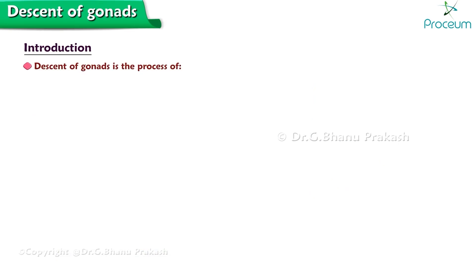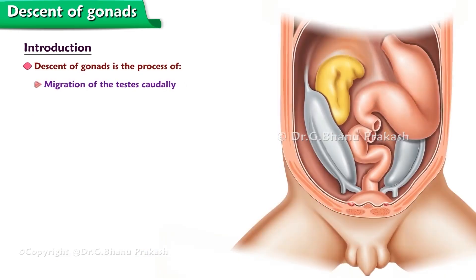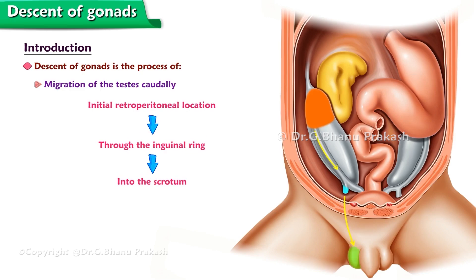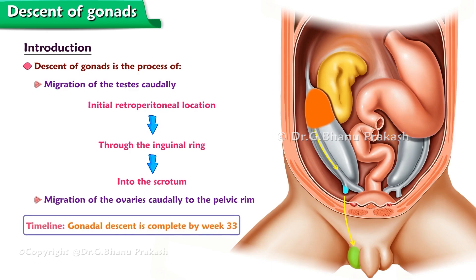To explain in simple language, the descent of the gonads is the process of the migration of the testes caudally from their initial retroperitoneal location through the inguinal ring into the scrotum, or the migration of the ovaries caudally to the pelvic rim. On the gestational timeline, gonadal descent is complete by week 33.